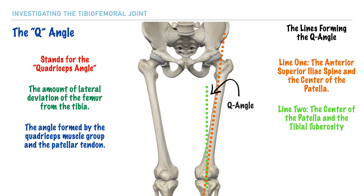The typical Q-angle range for males is between 10 and 15 degrees, whereas for females it is between 15 and 20 degrees. Individuals who have higher Q-angles — above 15 degrees for males and 20 degrees for females — are more predisposed to knee joint complications, specifically complications within the patellofemoral joint and injuries to the ligamentous structures of the knee.